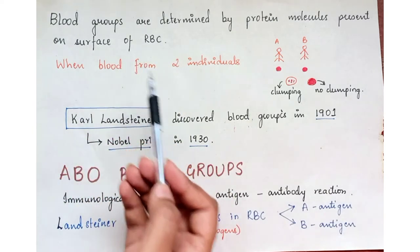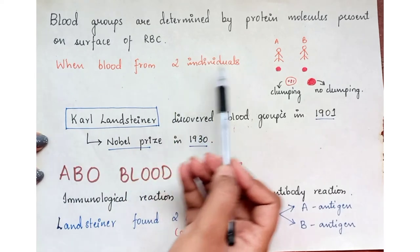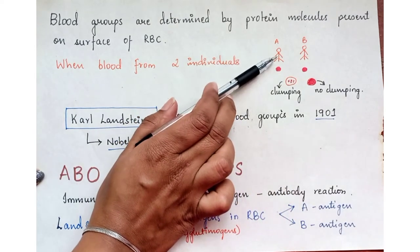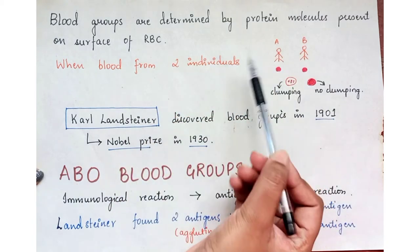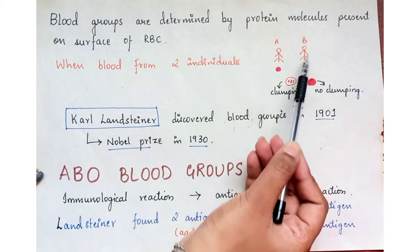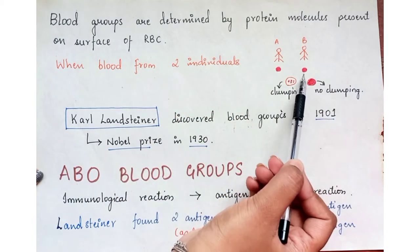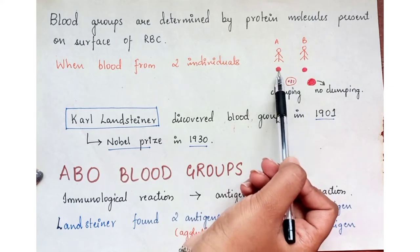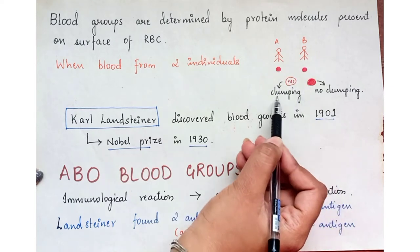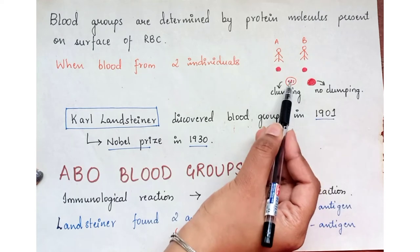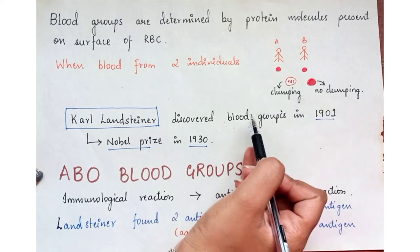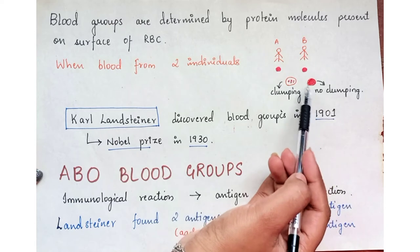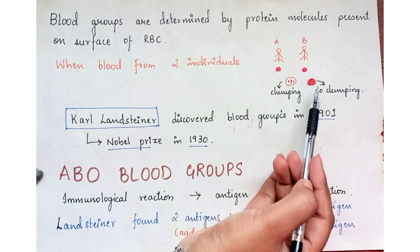To understand this, consider blood from two individuals — person A and person B. We draw blood from each and mix them together. In some cases we see clumping, that is piling up of RBCs, and in some cases we see there is no piling up of RBCs.